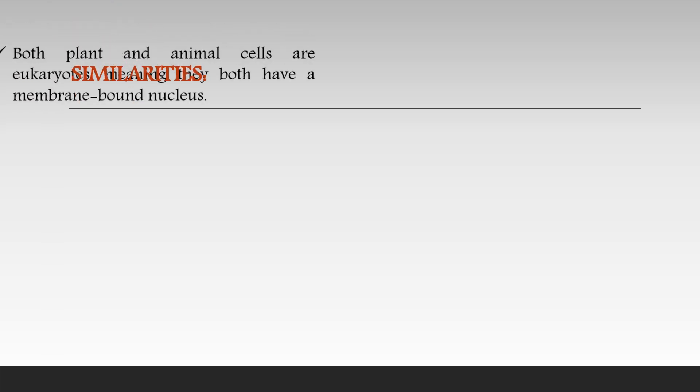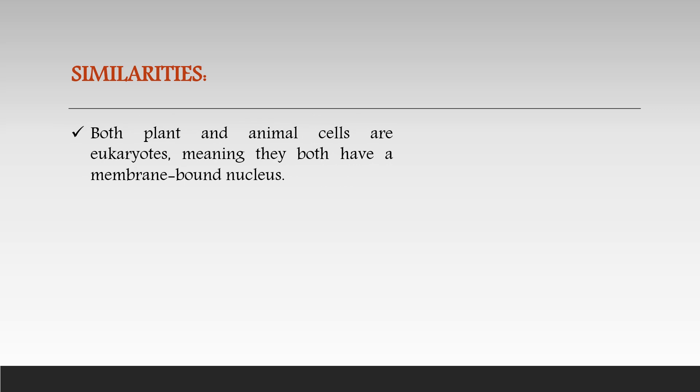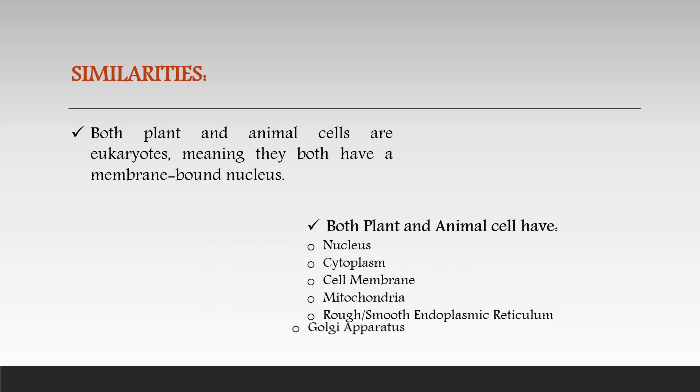Plants and animal cells share many similarities since they are both eukaryotes, which means that they have a membrane-bound nucleus. They also both have cytoplasm, a cell membrane, a nucleus, mitochondria, rough and smooth endoplasmic reticulum, a Golgi apparatus, and peroxisomes.